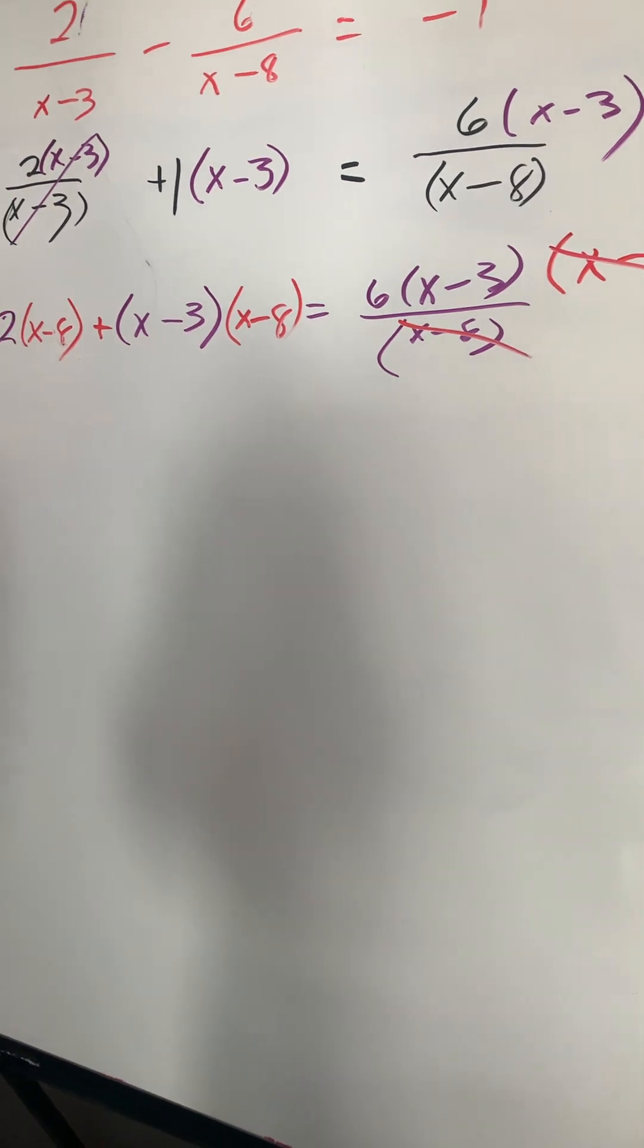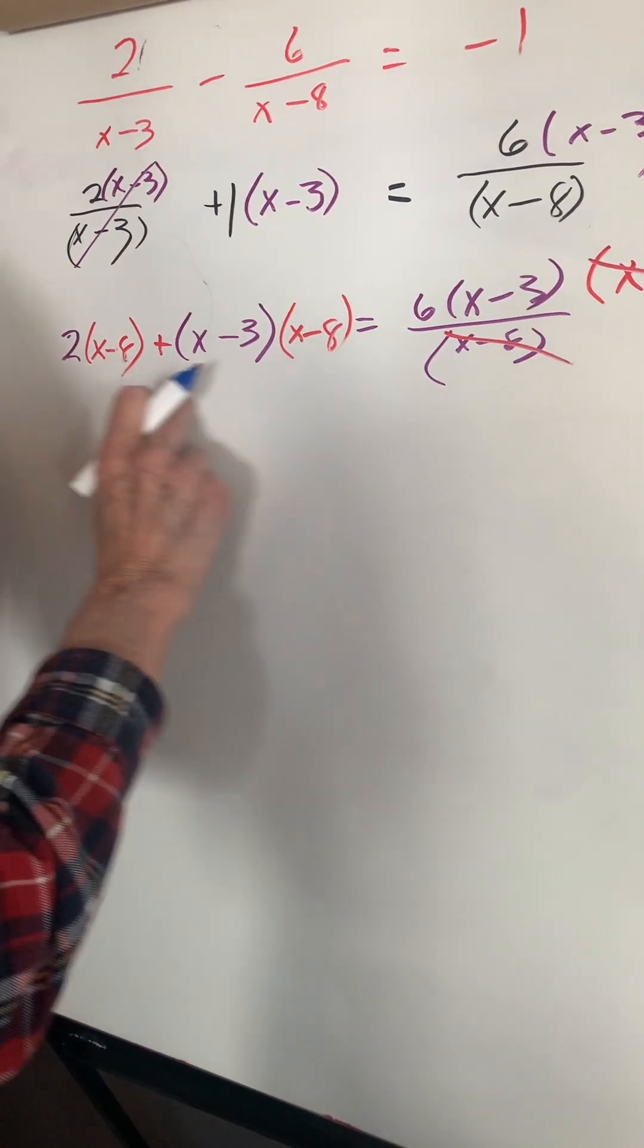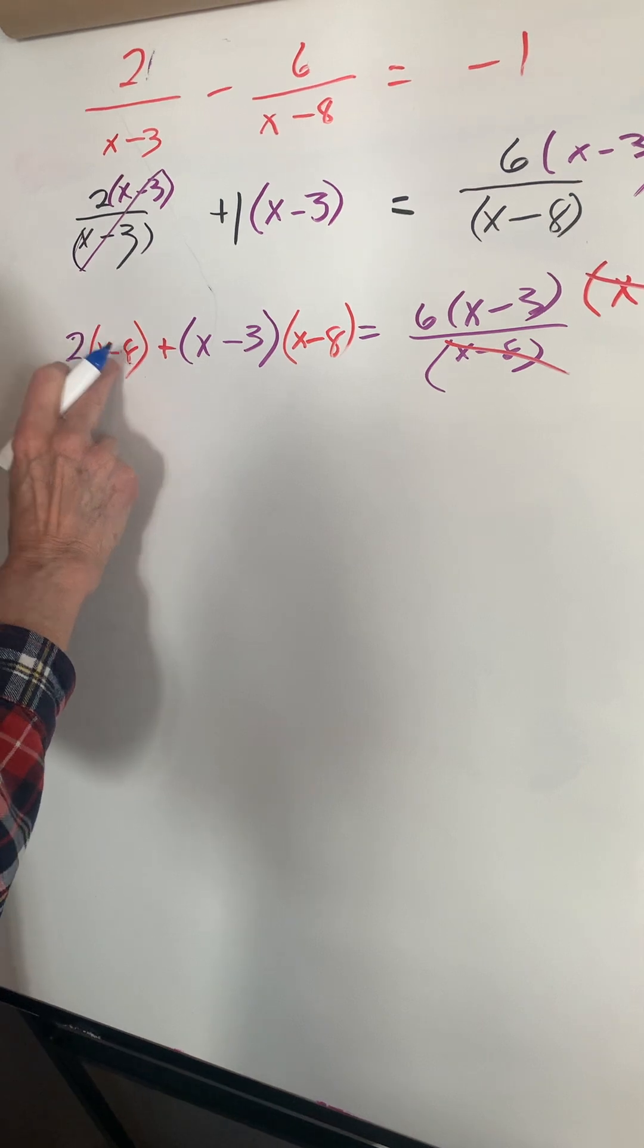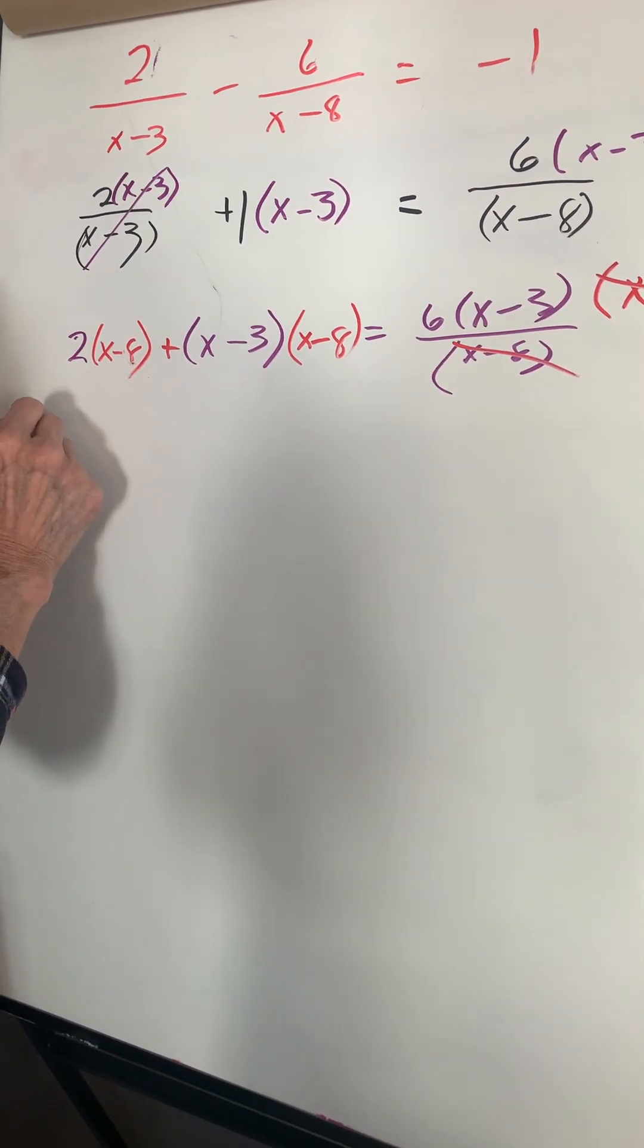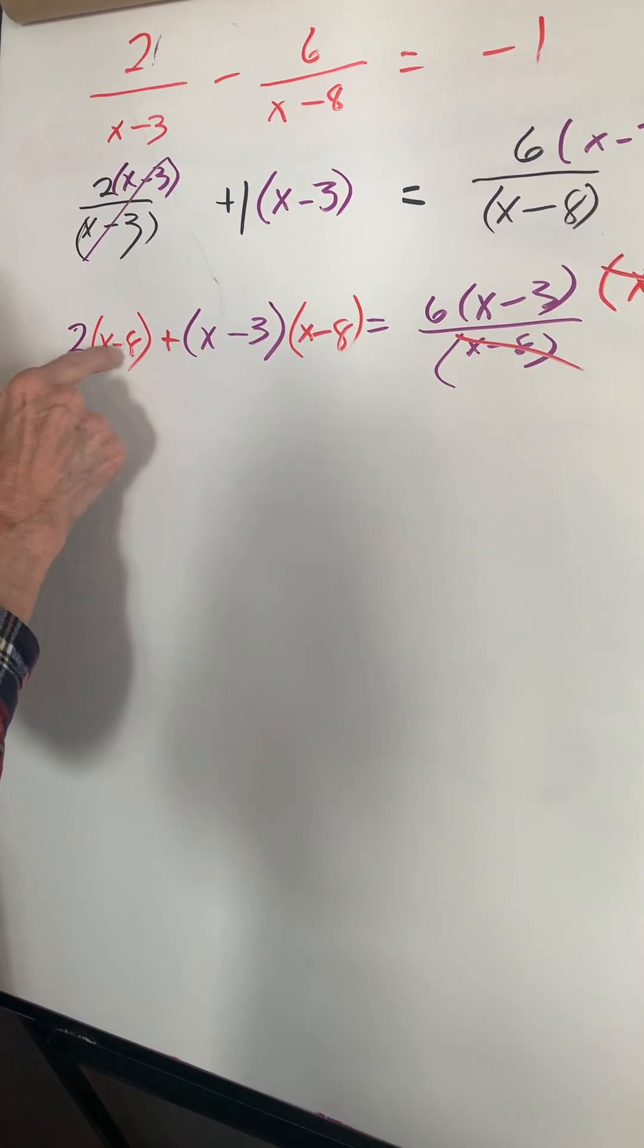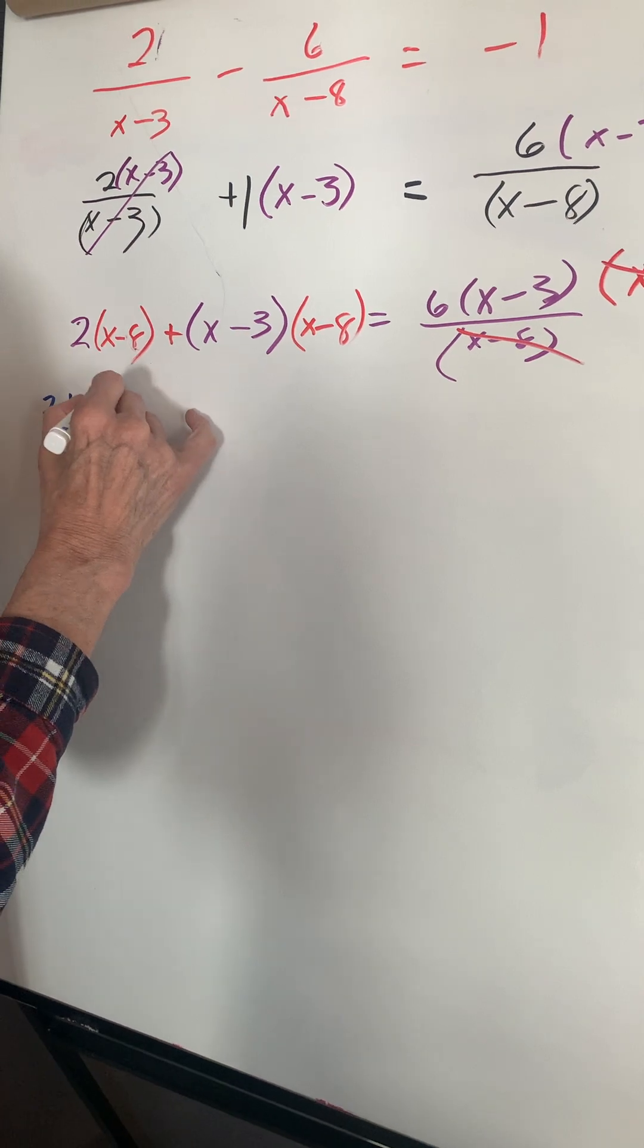All right, now let's expand. I can multiply. I have two of these, so I have 2x. Two times negative 8 is negative 16.